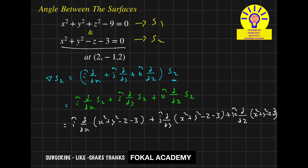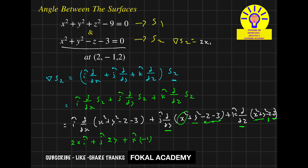Now differentiate with respect to x — other terms are constants, so derivative of x² is 2x, giving 2x i-cap. Differentiating with respect to y: derivative of y² is 2y, giving 2y j-cap. Differentiating with respect to z: the only z term is −z, so derivative is −1, giving −k-cap. So Del S2 = 2x i-cap + 2y j-cap − k-cap.